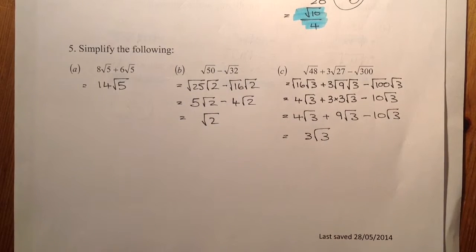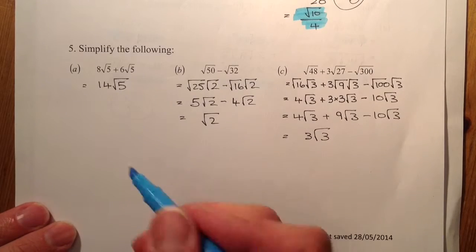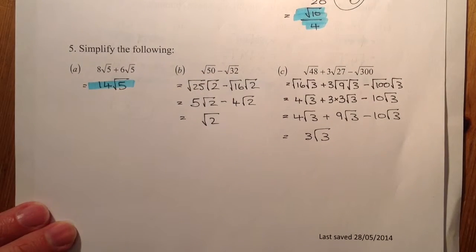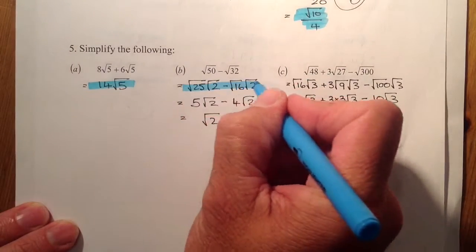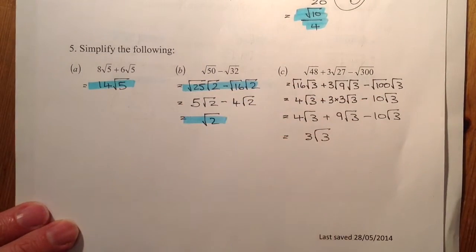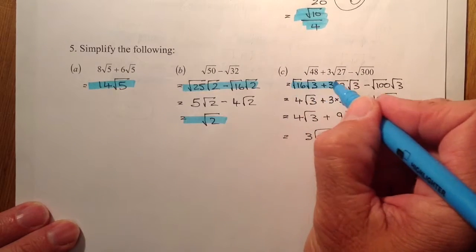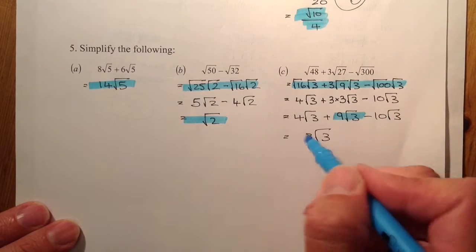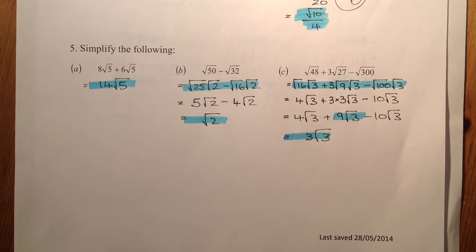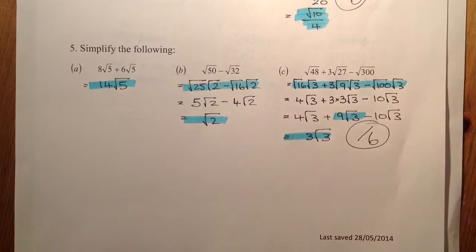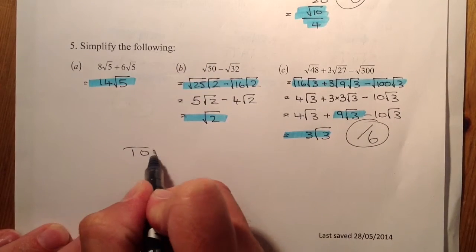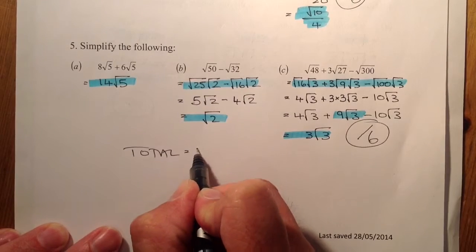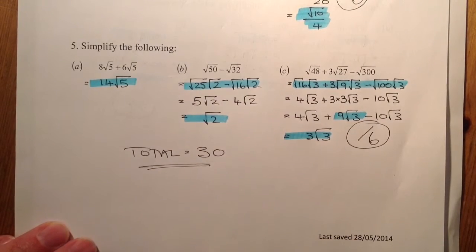For marking: one mark for part a by just gathering them together. One mark for splitting the surds down correctly in part b, and one final mark for getting root 2. One mark for splitting out the surds in part c, one mark for getting 9 root 3, and one final mark for getting 3 root 3. This question is also out of 6 marks, making the total for the assessment 30 marks.